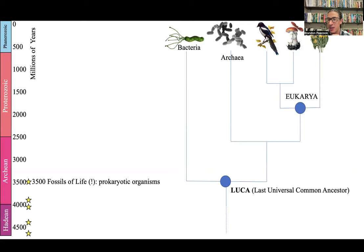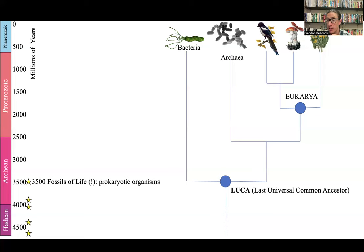Animals' closest relatives on this phylogeny are fungi — fungi and animals share a common ancestor to the exclusion of plants. Plants is sister to a clade that has fungi and animals. All those organisms, though, are eukaryotes. We share a more recent common ancestor with organisms called archaeans than either one of us does to organisms called bacteria.